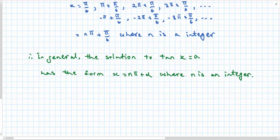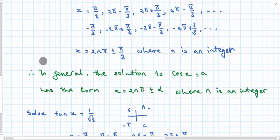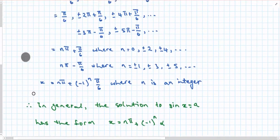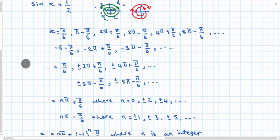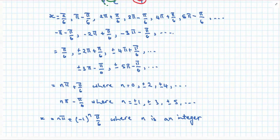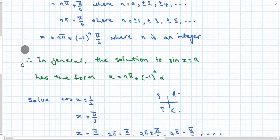Now you can try to memorize these three general forms. But if you don't, that's okay — because you can work through the solution as we have in each of these examples, look for the pattern, and come up with the general form for each problem you do.